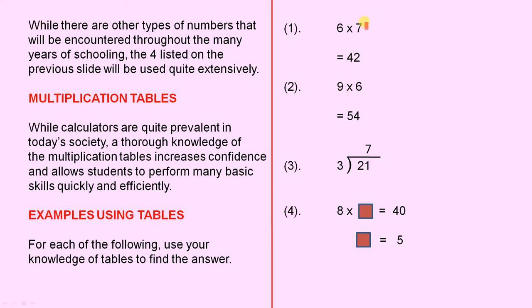Number one. Six times seven. Now if you know your tables efficiently, you know that the answer is 42. Six sevens are 42.